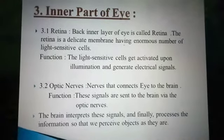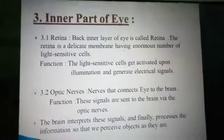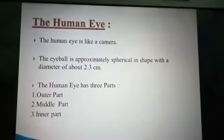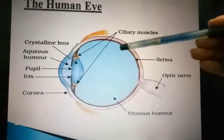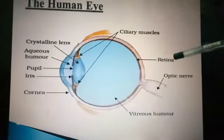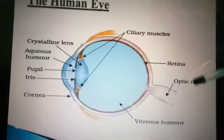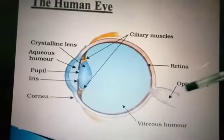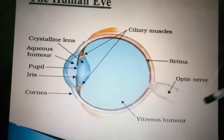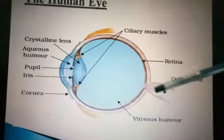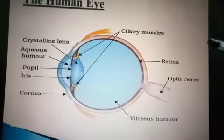Now the inner part of the eye. Two structures are present: retina and optic nerves. In the diagram, the innermost back layer is known as the retina, and the optic nerves connect the eye to the brain. The optic word is used for eye-related structures. The optic nerves send messages from the eye to the brain and vice versa.